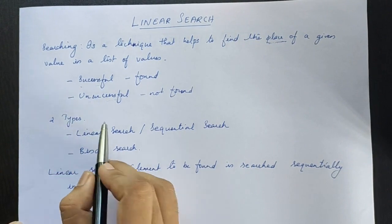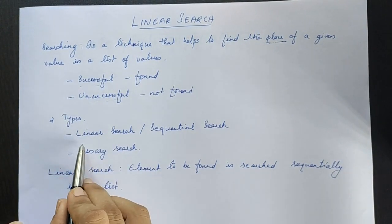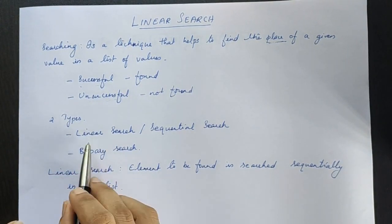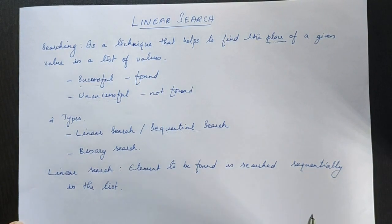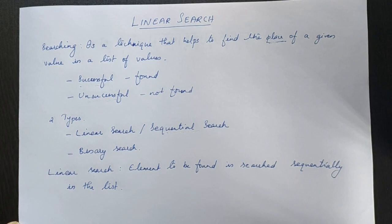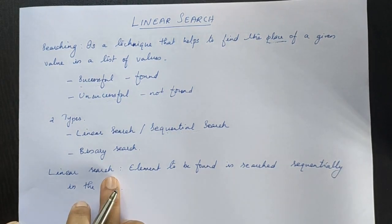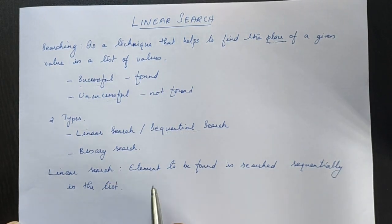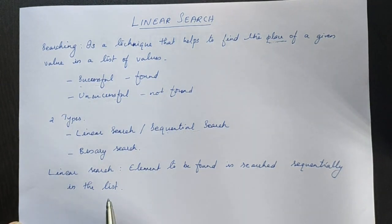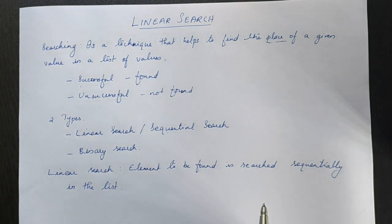Searching methods include linear search and binary search. Linear search, also called sequential search, is one of the most common searching techniques. The element to be found is searched sequentially in the array in sequential order.